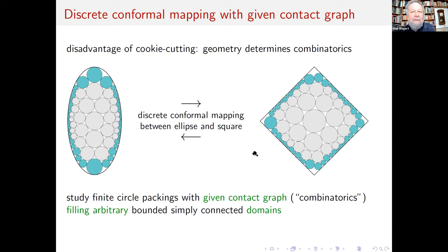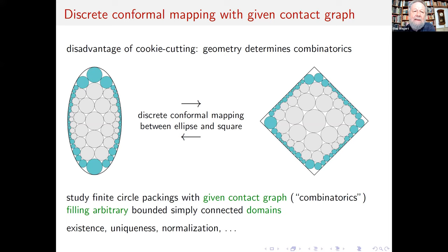Our objective was to study finite circle packings with a given contact graph, which fill arbitrary bounded simply connected domains — which need not be Jordan. We are interested in basic questions: What about existence? What about uniqueness? In general, we cannot expect uniqueness; we need some additional normalization. So what are appropriate conditions for normalization?